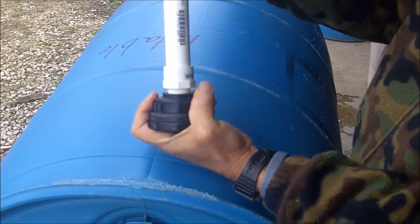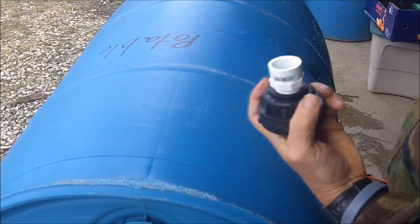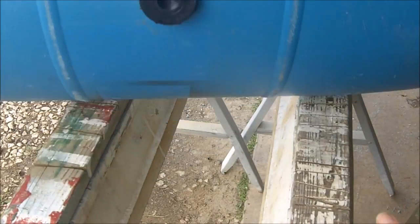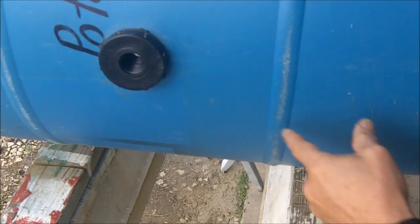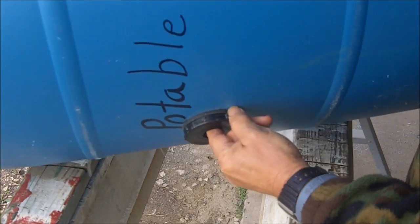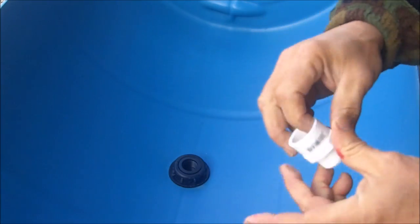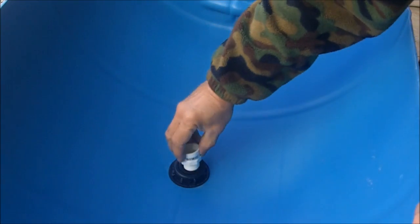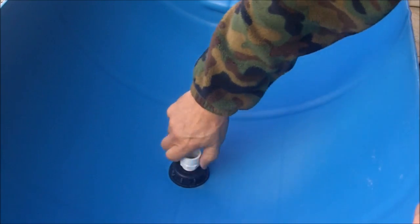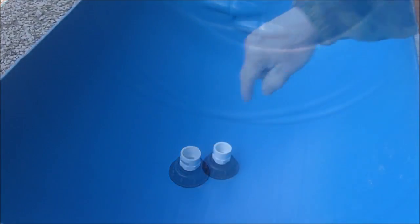I've got my bulk head adapter screwed in now, with the rubber gasket on the outside as the instructions say. This part screwed in very tightly on the inside. This thing is threaded for this PVC adapter. I'll screw this in here, and then I can put my three quarter inch PVC pipe in.